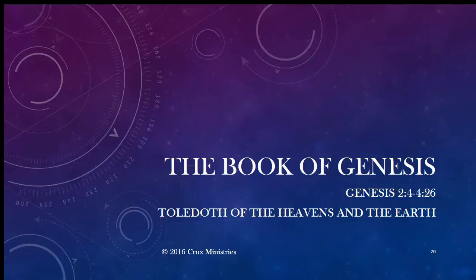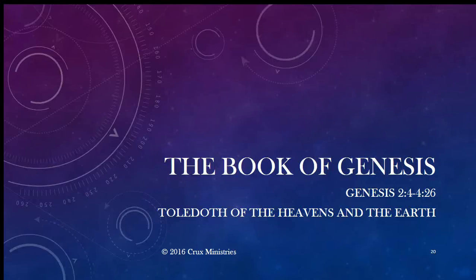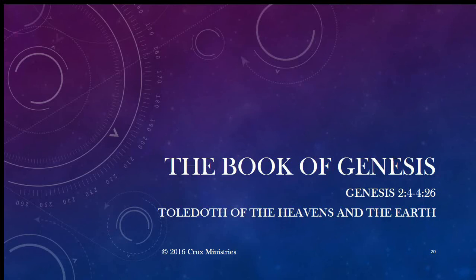Hey everybody, welcome back to Crux Ministries. This is David Witt and Sarah Witt, and we're beginning our study of Genesis — this is part three of our look at the book of Genesis. Today we'll be looking at Genesis 2:4 through 4:26. We're focusing on sections usually translated as 'these are the generations of' or 'this is the account of.' Today is the account of the heavens and the earth — the toldoth of the heavens and the earth.